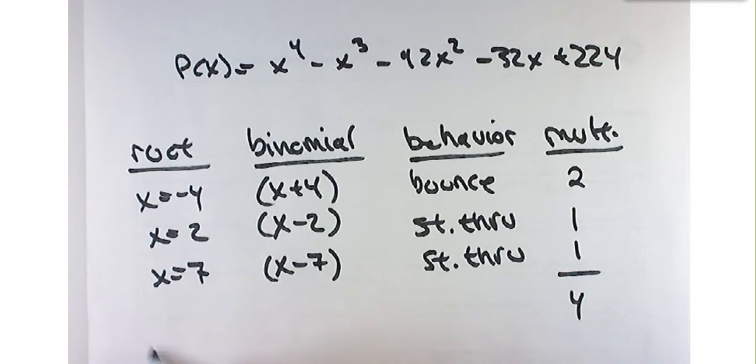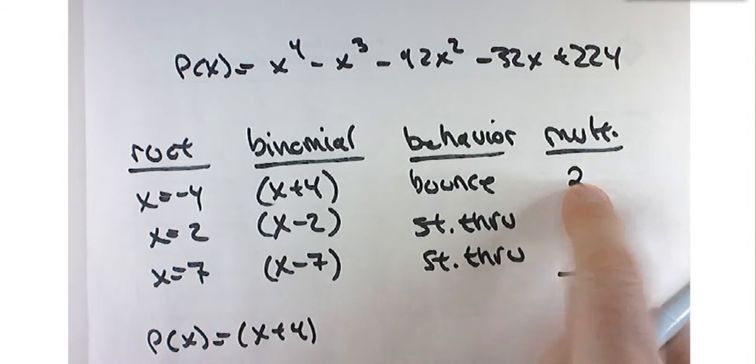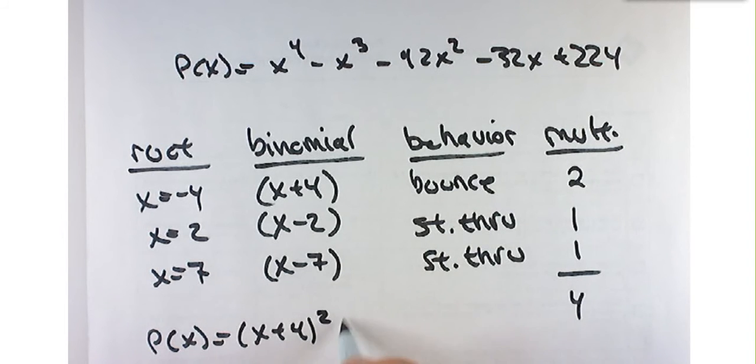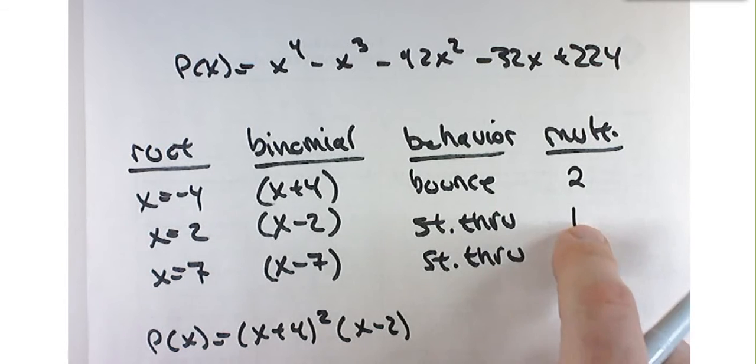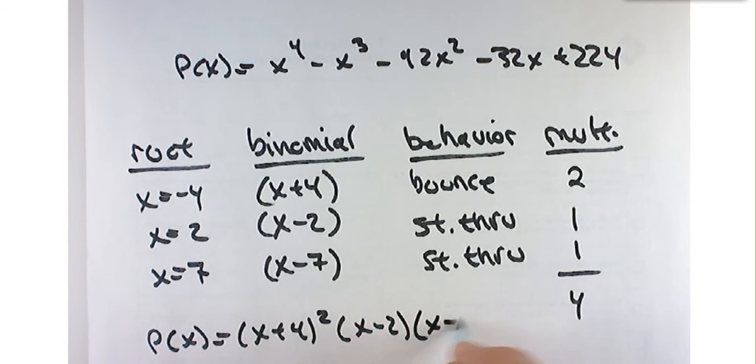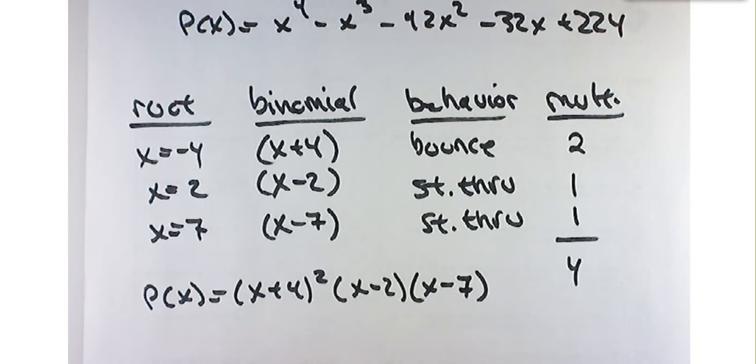And that gives me degree 4, which is nice because it matches that. So I can rewrite this now as p of x is x plus 4 to the power of 2, and then x minus 2 to the first power, which I'm just going to ignore, or not write.